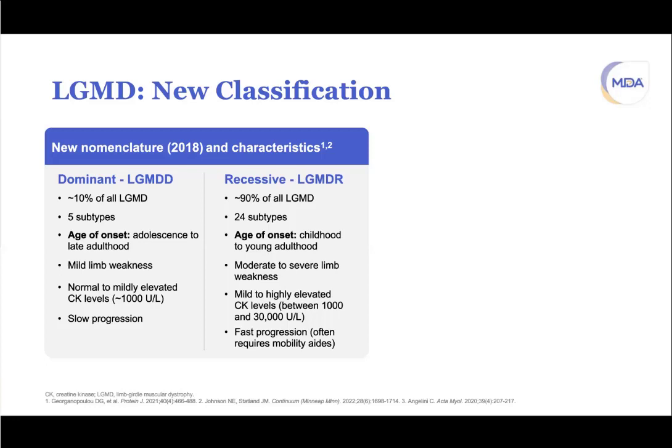CK levels can be markedly elevated in recessive LGMD, as high as 30,000 — approaching Duchenne-like numbers. When I was in training, I was taught that if something looks like Duchenne but in a girl, think LGMD. If CK is over 10,000, think recessive. For dominant forms, CK tends to be in the several hundred to approximately one thousand range. Recessive diseases progress faster and often require walkers or power chairs.